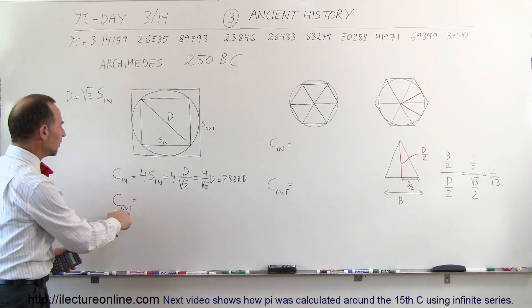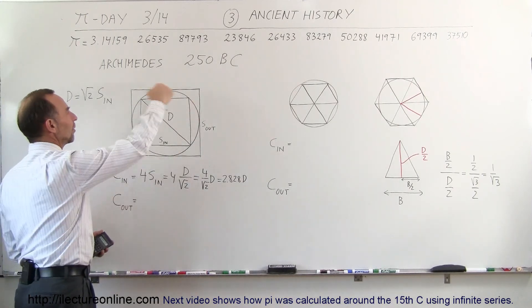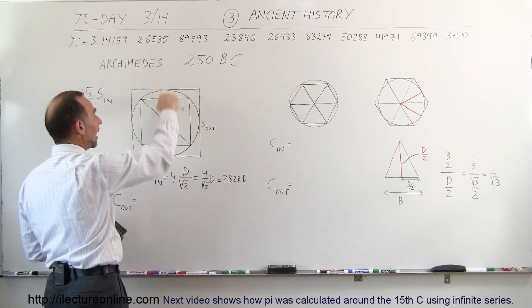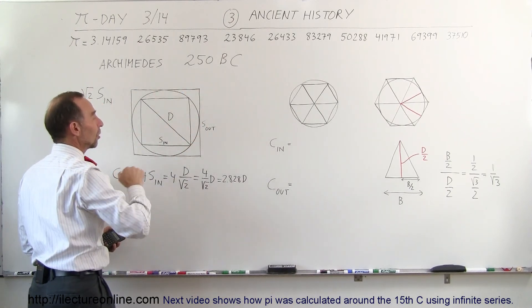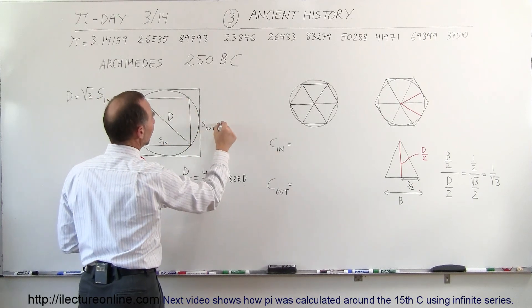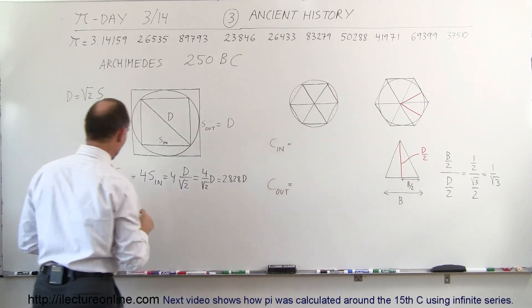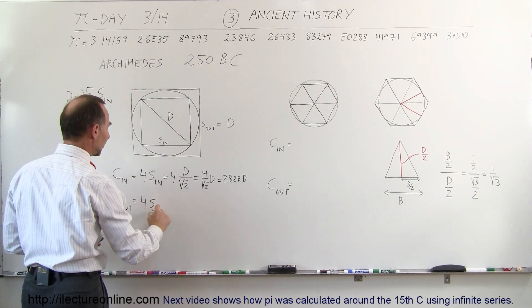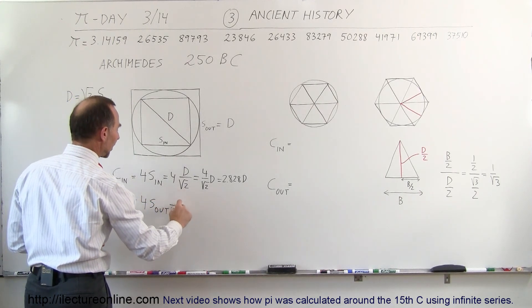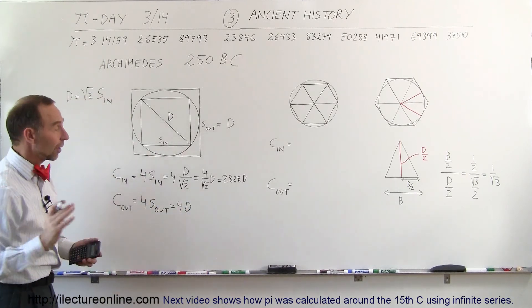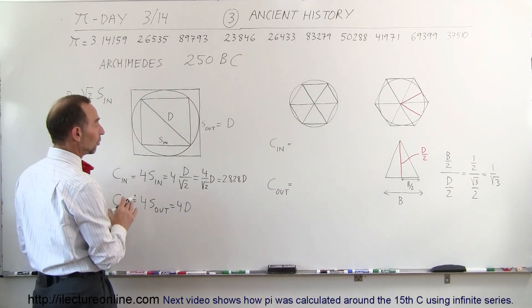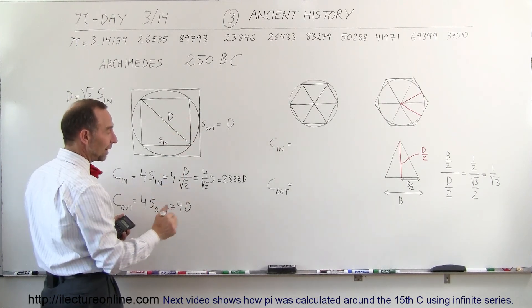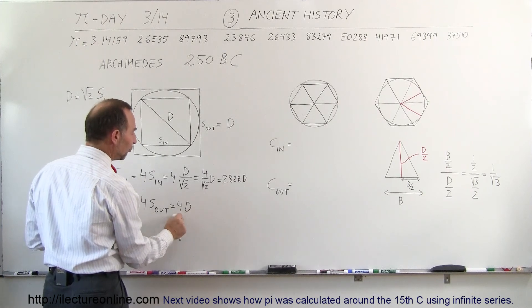What about the circumference of the outside square? The outside side is equal to the diameter of the circle, so the outside circumference is four times the outside side, which is four times the diameter. This means Archimedes knew that the ratio of circumference to diameter was somewhere between 2.828 and 4.